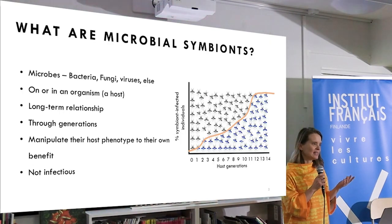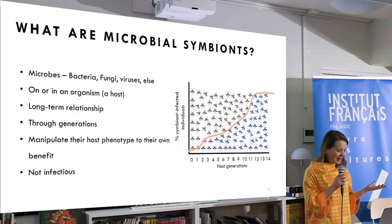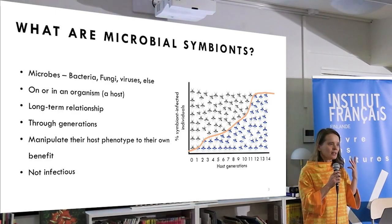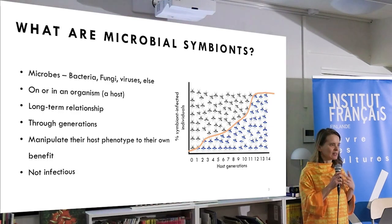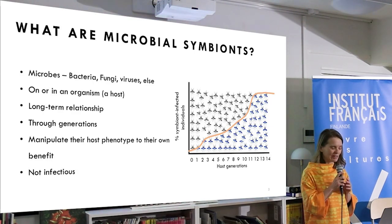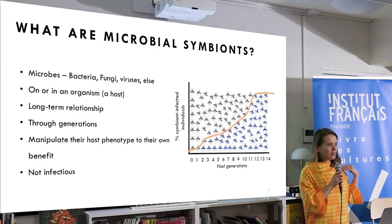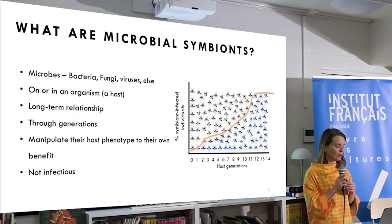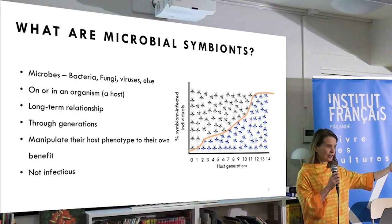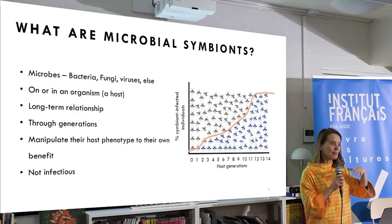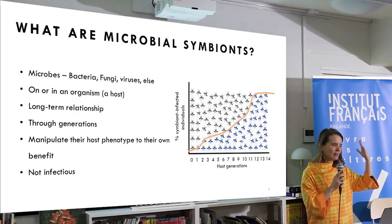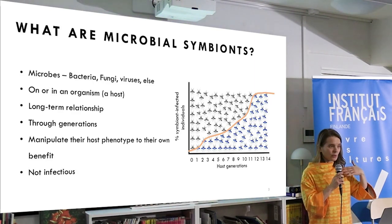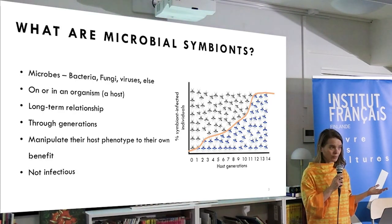What are microbial symbionts? Microbial symbionts are microbes — this includes bacteria, fungi, viruses, and some eukaryotic microorganisms — anything we could see under the microscope. They are on or inside the body of the host, or even within the cells of the host. That could be me, you, your dog, your cat, the birds outside — as well as plants and other eukaryotic organisms. Our relationship with those microbes is a long-term one, and their transmission is through generations.